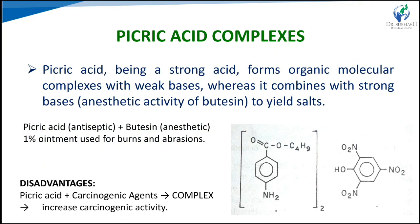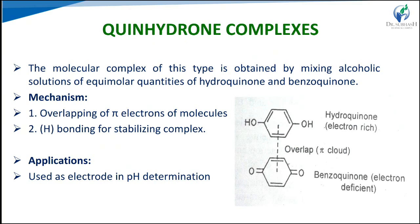Picric acid complexes: picric acid, being a strong acid, forms organic molecular complexes with weak bases. The complex is an indication of the magnitude of carcinogenic activities. Picric acid plus carcinogenic substances increases carcinogenic activity. It also combines with strong bases to yield salt forms. For example, picric acid plus butsin as a 1% ointment is used for burns and abrasions.